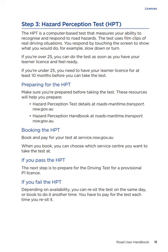Preparing for the HPT. Make sure you're prepared before taking the test. Resources are available at roads-maritime.transport.nsw.gov.au. Booking the HPT: book and pay for your test at service.nsw.gov.au, and you can choose which service centre you want. If you pass the HPT, the next step is to prepare for the driving test for a provisional P1 licence. If you fail the HPT, depending on availability, you can re-sit the test on the same day or book for another time. You have to pay for the test each time you re-sit it.